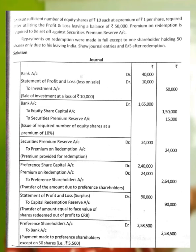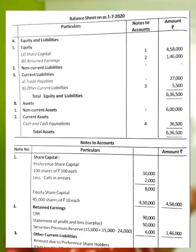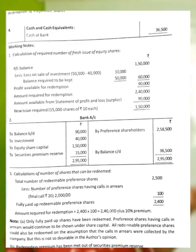There are three working notes. Don't confuse working notes with notes to accounts. Working Note 1: Calculation of the required number of fresh issue of equity shares. Working Note 2: Bank Account. Working Note 3: How to calculate the number of shares to redeem. Then we prepare journal entries, notes to account, and the balance sheet.